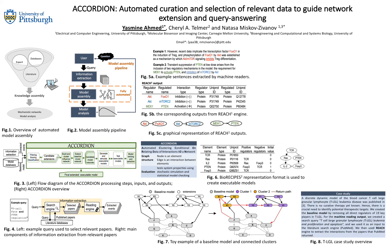To evaluate the performance of Accordion, and in the absence of an established standardized set of benchmarks, we selected several published models created and curated manually and validated against experimental results, and we tested Accordion on those models. Here we show an example — a discrete dynamic model of the blood cancer T-cell large granular lymphocyte leukemia disease.